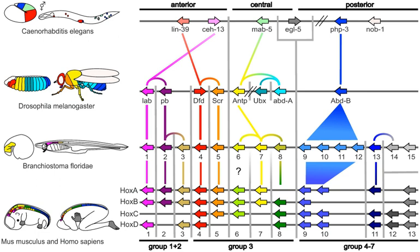Evolutionary developmental biology is a field of biological research that compares the developmental processes of different organisms to infer the ancestral relationships between them and how developmental processes evolved.